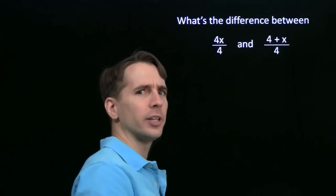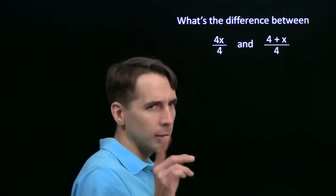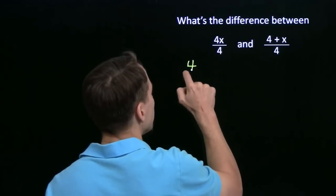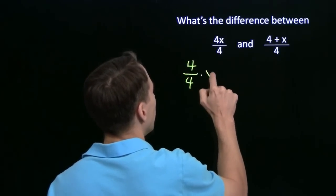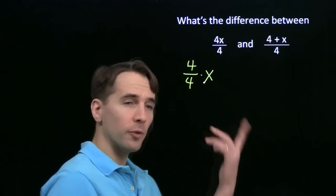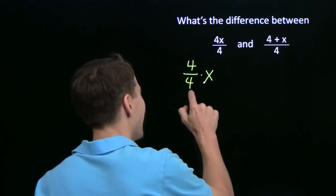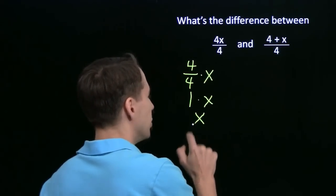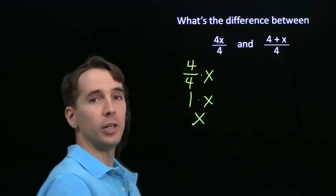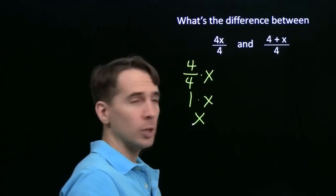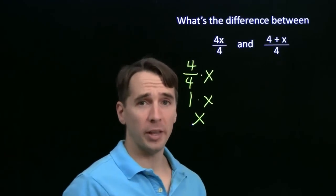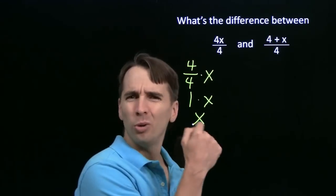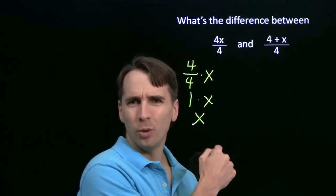These two really look like they'll come out to be the same thing. Let's take a closer look at why we can cancel here. We can write this as 4 over 4 times x. Of course, 4 over 4 is just 1. 1 times x gives you x. We can cancel here. What about over here? Why can't we just cancel off the 4s and call that x, or cancel off the 4s and call it 1 plus x? Notice I didn't write either one of those down.